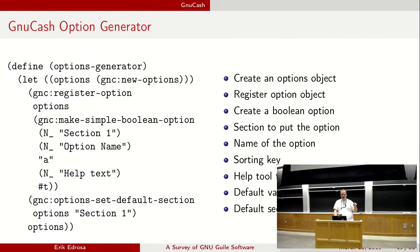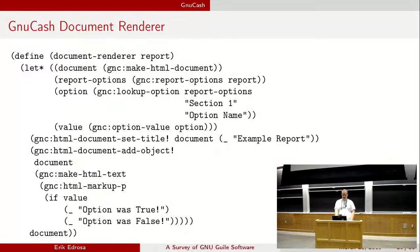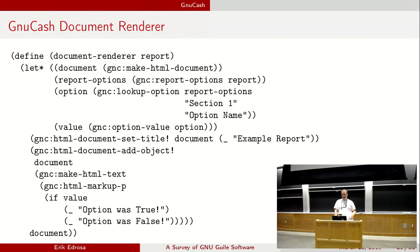Something you might notice, which is kind of interesting, is the capital N underscore — that's used for providing translations for your reports, so it will translate these strings. Now let's look at the document renderer. The document renderer takes in a report and allows you to create an HTML document. We can access the options for this report — here we get that Boolean option we defined and get the value. Then we do some manipulation of the document: we set the title, add objects like a paragraph P tag, and based on the value of that option, we print whether the option was true or false. At the end we just return the document.